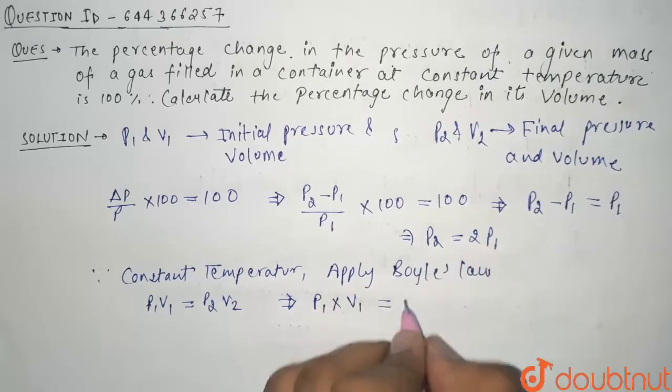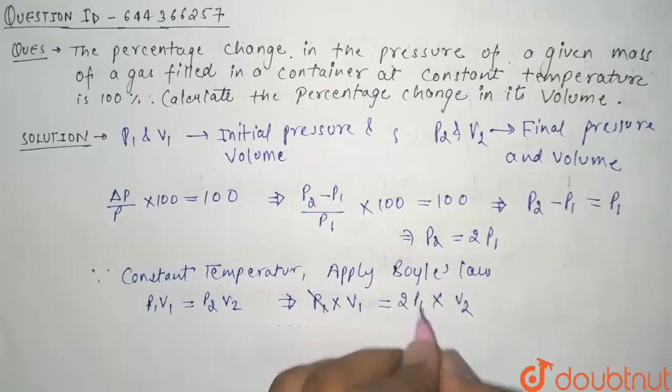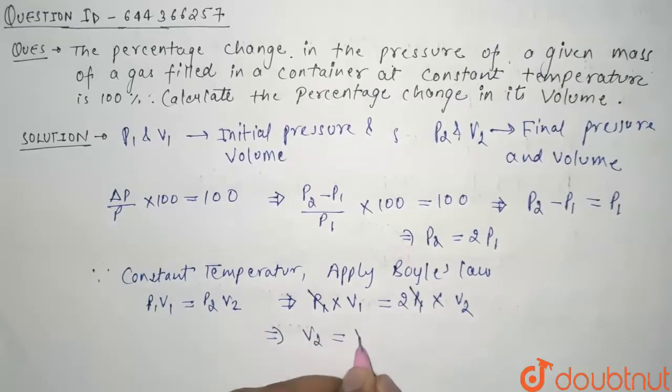P2 is what? P2 is 2P1 and V2 is V2. So from here, P1 and P1 will cancel and V2 comes out to be V1 by 2. So this is our final volume.